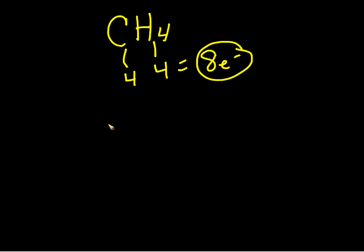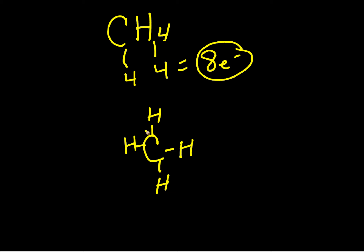Since carbon is present, it is always my central atom. Hydrogen can only have two electrons around it, so I'm going to have four single bonds around my carbon. Each single line is two electrons, so counting: two, four, six, eight — I have eight electrons in my structure. My structure is complete.